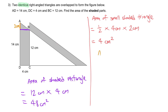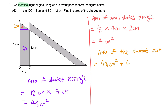Now we move to the area of the shaded part. We find this entire area first: 48 plus 4 equals 52 cm squared. Then we multiply by 2 because area A equals area C. Hence the answer is 52 times 2, which gives 104 cm squared.